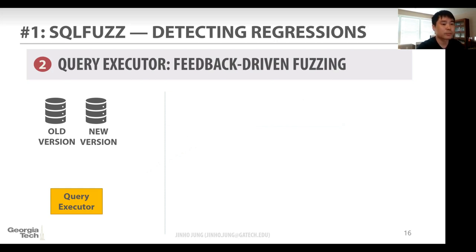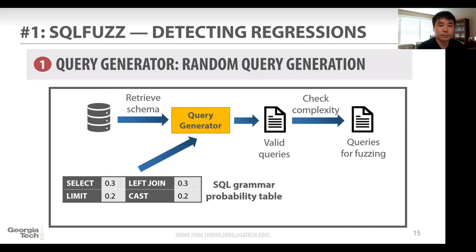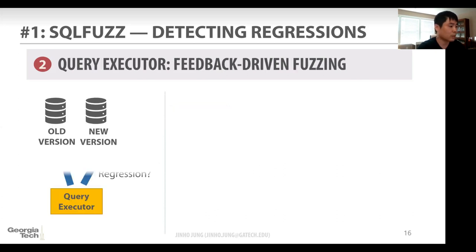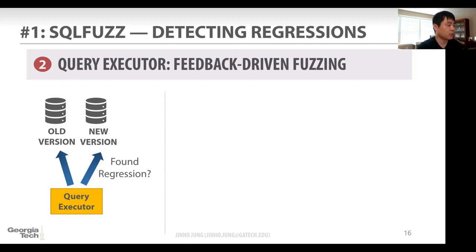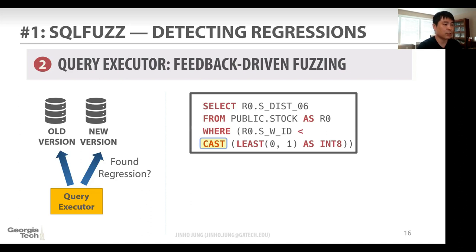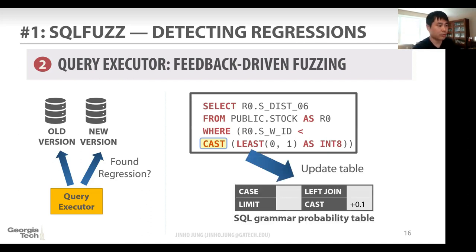Hi, this is Dan, a CMU student. I was just wondering if the probability table is just to ensure realistic queries, or was there something else done with that? After we create a set of queries, we run them using the executor. If we find any regression, we count each SQL class when we find the regression, and then update the table so that if one class is more likely to make regression, at the next round we use that class more. So we can increase the probability of finding performance regressions. That's how the SQL grammar probability table works.